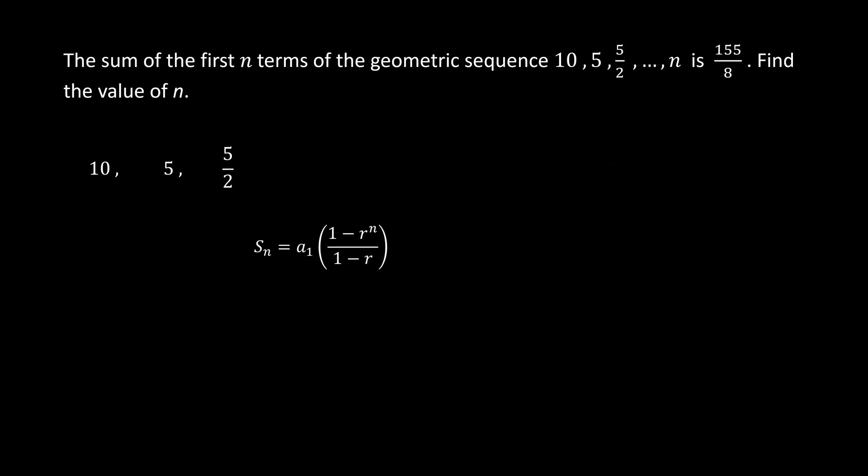Now we're going to use the sum formula. Given that a1 is 10 and r is 1 over 2, we substitute and get this.